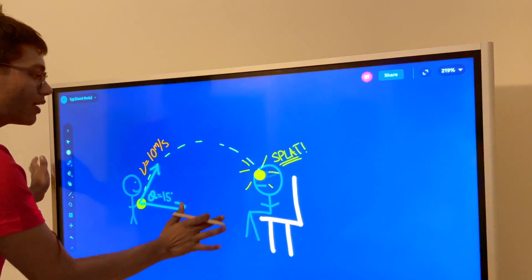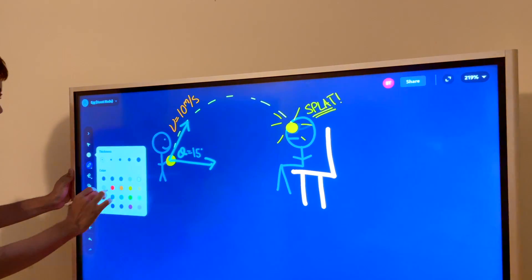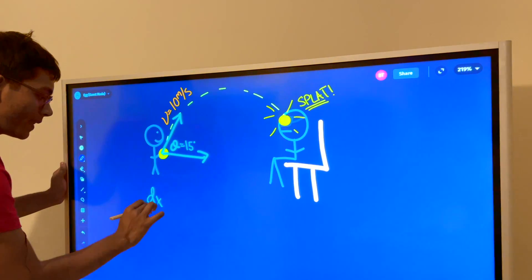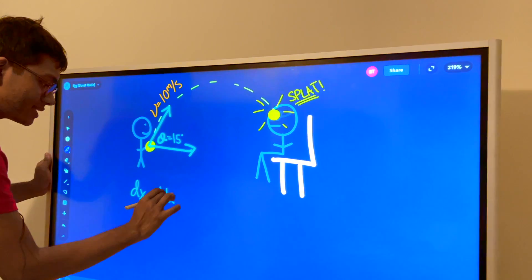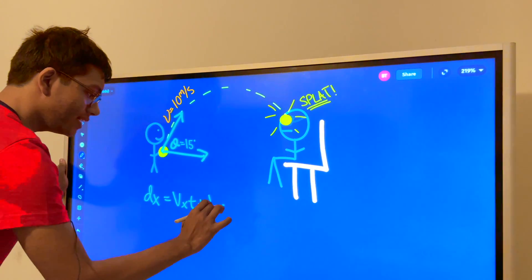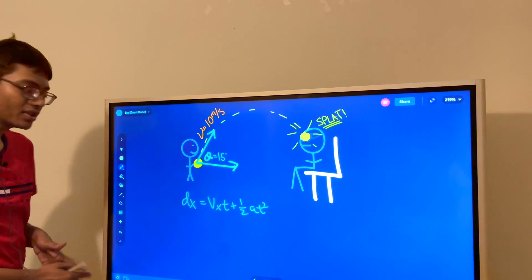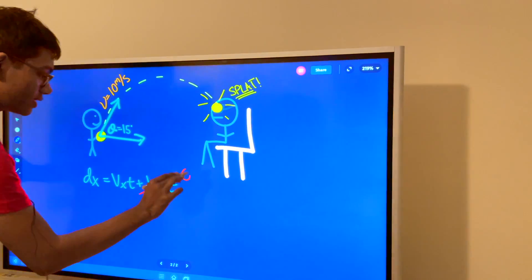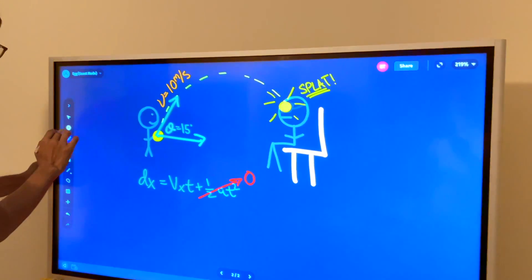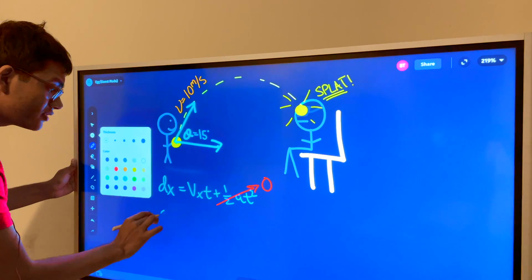Well we can go ahead and start by one of the kinematics formulas. Here it is. We're going to start with this formula: d_x is equal to v_x*t plus half a*t squared. There is no acceleration in the horizontal direction so this term goes to zero. So we're left with d_x is equal to v_x times t. Now what is v_x?